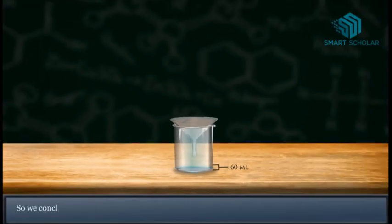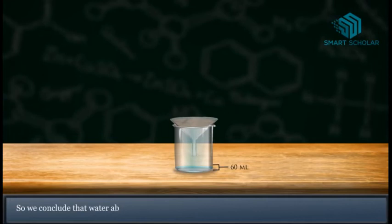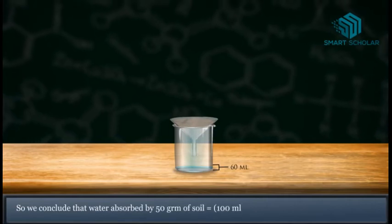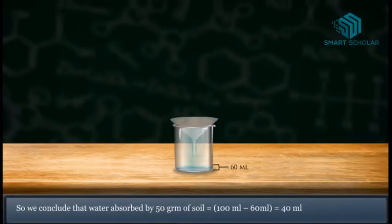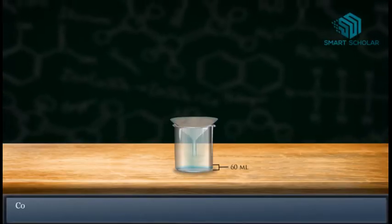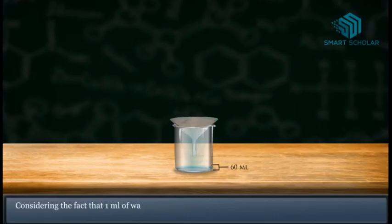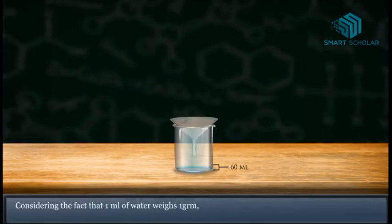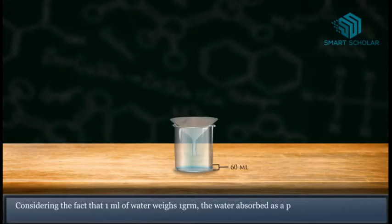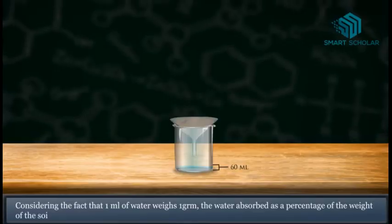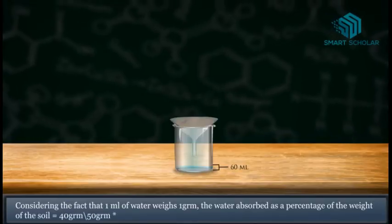So we conclude that water absorbed by 50 grams of soil is equal to 100 milliliters minus 60 milliliters, which gives us 40 milliliters. Considering the fact that 1 milliliter of water weighs 1 gram, the water absorbed as a percentage of the weight of the soil is equal to 40 grams divided by 50 grams multiplied by 100, which gives us 80%.